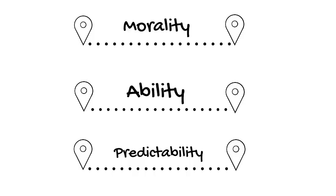And the third dimension is called predictability. Does the person or the system perform in the way that I would expect on a timeline that I would expect? In other words, is the system predictable? Morality, ability, and predictability—these are the three dimensions of trust.